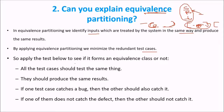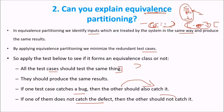When applying equivalence partitioning, all test cases inside a class should produce the same result. If one test case catches a bug, then others should also catch the same bug. If one does not catch the defect, others should not catch it either. Note that defects are bugs which come after the installation, deployment, or when it has already been submitted to the user.